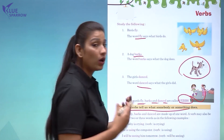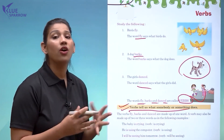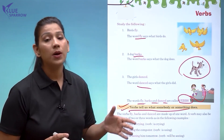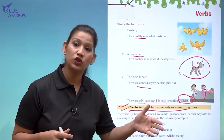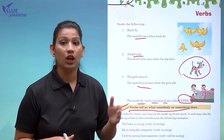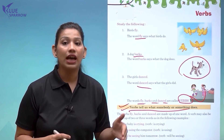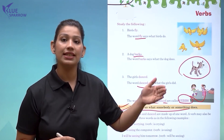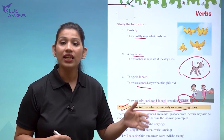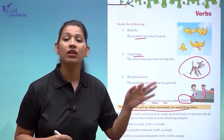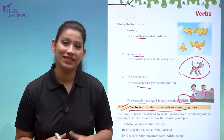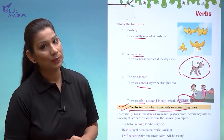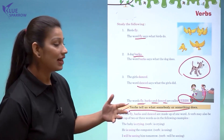Verbs are basically the words which show us what the subject is doing — what the noun is doing. Noun is a person, place, animal, or thing. When a noun does anything, it is reflected by verbs. Let us understand this concept through a video.